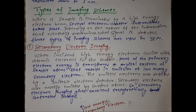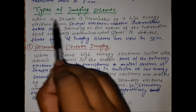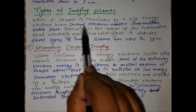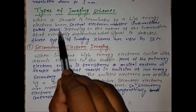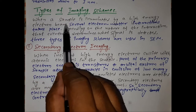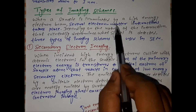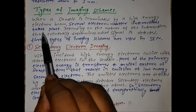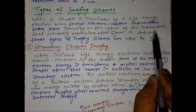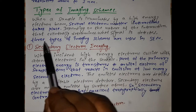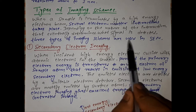When a sample is illuminated by a high-energy electron beam, several electron-matter interactions take place. Depending on the nature of these interactions, which determines what signal is detected, three types of imaging schemes are used in SEM.